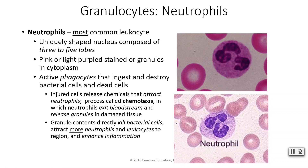Your neutrophils are phagocytes — they ingest and destroy bacterial cells and dead cells. An injured cell will release certain chemicals that attract the neutrophils; this is called chemotaxis. The neutrophils then exit the bloodstream via diapedesis, enter the damaged tissue, and release those granules to help destroy all the dead and dying cells and tissues. The granule contents directly kill bacterial cells and also attract additional neutrophils and leukocytes to the site, enhancing the inflammatory response to speed up tissue repair.